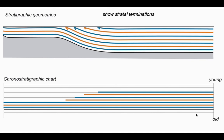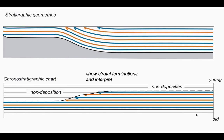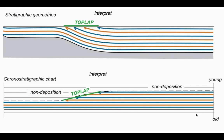Adding more information, we can identify strata terminations and show them conventionally — strata that terminate upwards are marked with an inverted half arrow on the stratigraphic geometries diagram. The same terminations are represented on the chronostratigraphic chart below. On the left hand side there's an area of non-deposition, and we can label these terminations as top lap, identifiable on the chronostratigraphic chart.